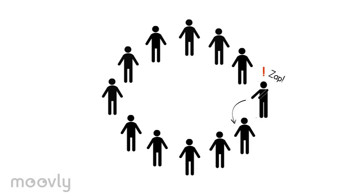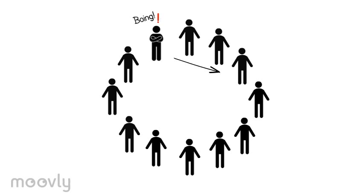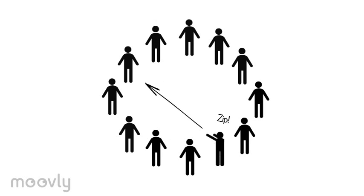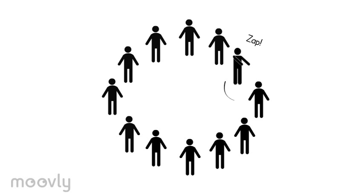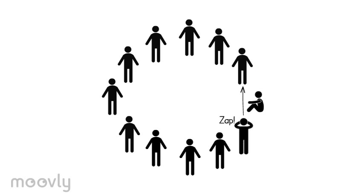Here the first mistake is made. The participant reflected a zap with another zap instead of a boing — he now loses one of his two lives. The game continues. Another mistake is made: the person used boing on another boing instead of passing the turn on to someone else, and loses one life. Now someone makes another mistake: the person passed on the turn to their direct neighbor using zip instead of zap. He lost his second life and has to sit down.